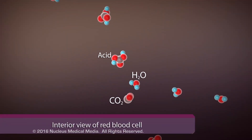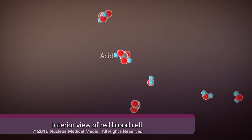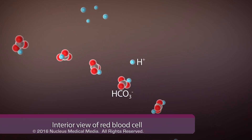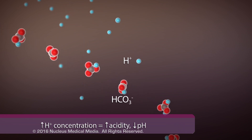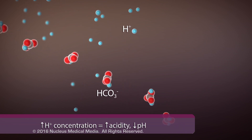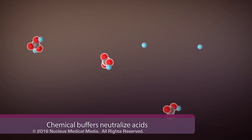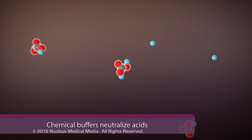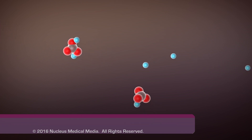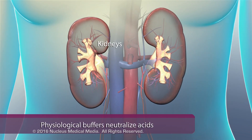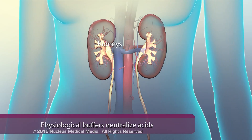Metabolic processes constantly release acids, which freely release hydrogen ions, resulting in increased acidity and lower blood pH. In response, the body can use chemical buffers, such as bases, to neutralize the acids, and physiological buffers to facilitate their excretion through the kidney.